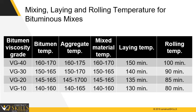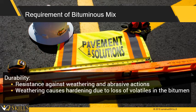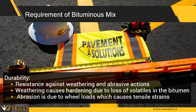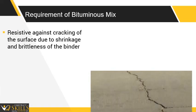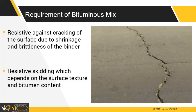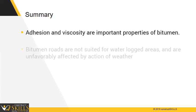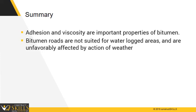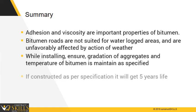The temperature should be approximately 130 to 150 degrees Celsius while laying. The bitumen mix should have durability to resist weathering and abrasive actions. Weathering is due to loss of volatiles in the bitumen, and abrasion is accrued due to wheel loads which can cause tensile strains on the surface. It should be flexible enough to resist the shrinkage and brittleness of the binder material. The finished pavement should avoid skidding of vehicles, which depends upon the texture and the bitumen content. Adhesion and viscosity are important properties of bitumen. Bitumen roads are not suited for waterlogged areas and are unfavorably affected by the action of weather. While installing, ensure gradation of aggregates and temperature of bitumen are maintained as specified. If the road is constructed as per specification, it will get 5 years of life.